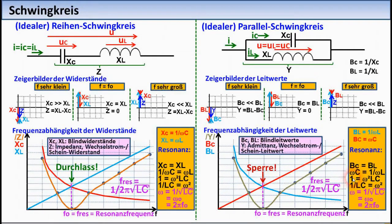For the parallel resonant circuit, the same applies, except that it is useful here to work with the admittances instead of the resistances. This results in a simpler and clearer calculation. The letter B is used for reactive admittances, and the letter Y for the complex total admittance. For the resonant frequency, the same formula results as for the series resonant circuit.